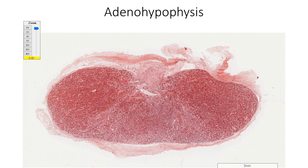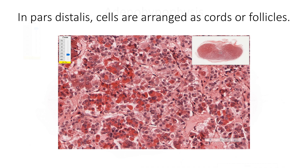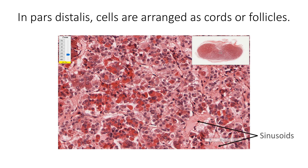All three parts of adenohypophysis are made up of glandular epithelium. Pars distalis is the largest part, showing a central portion and two lateral wings separated by vascular trabeculae. Cells in the pars distalis are arranged as cords or irregular follicles, with clumps of cells separated by sinusoidal capillaries lined by fenestrated endothelium.